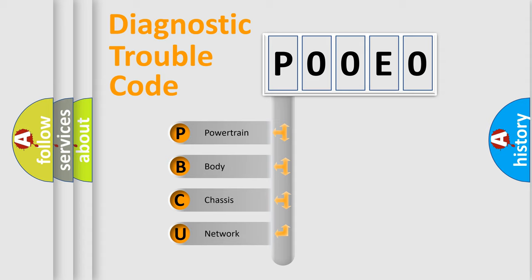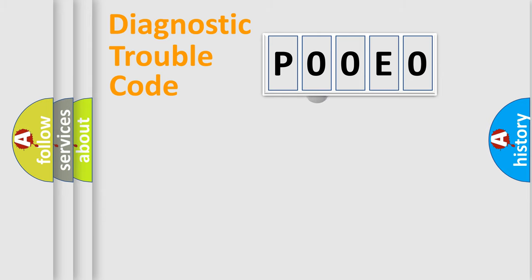We divide the electric system of automobile into four basic units: Powertrain, Body, Chassis, Network. This distribution is defined in the first character code.